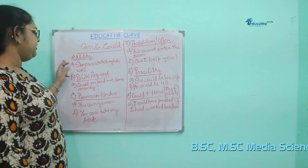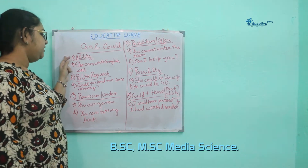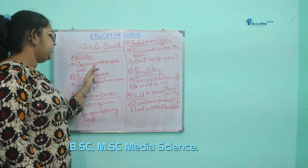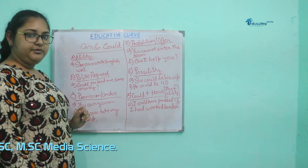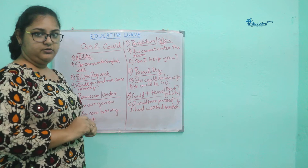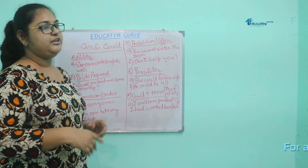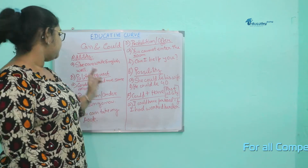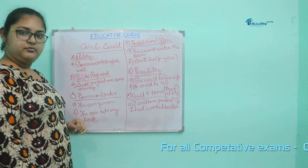In the case of ability, an example can be: she can write English well. That means she has the ability to write well. Maybe she does not write out of laziness, but she can write well.